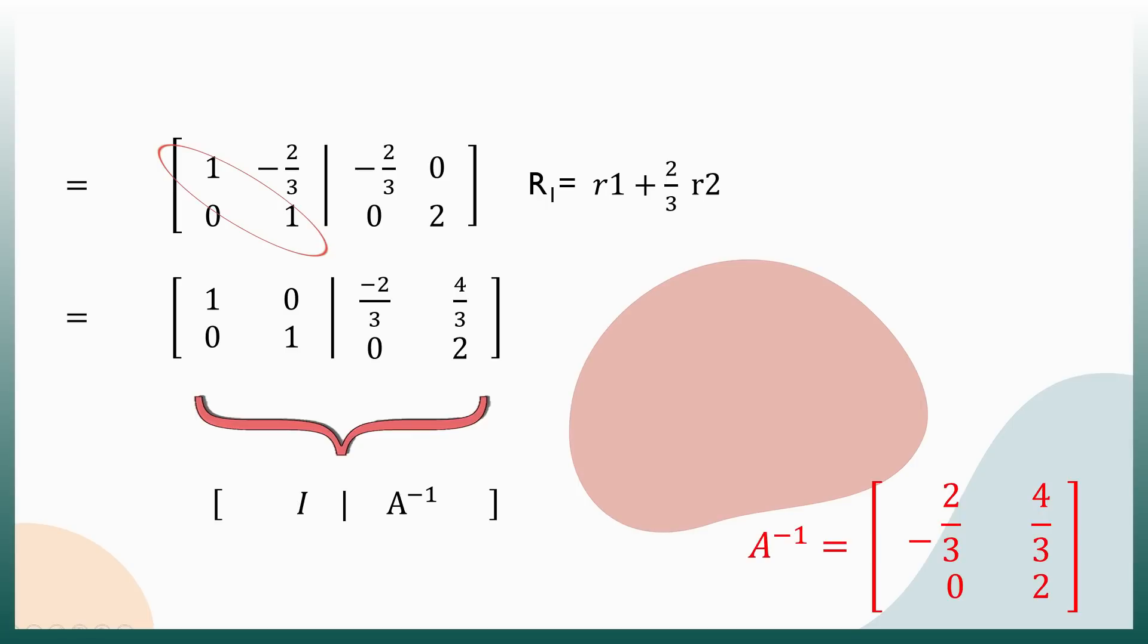How can we reduce negative 2 thirds in row 1 to 0? We have to think of a way to make row 1 and row 2 cancel each other out. So, our solution is row 1 equals R1 plus 2 thirds R2. 1 plus 0 equals 1, negative 2 thirds plus 2 thirds equals 0. On the right, negative 2 thirds plus 0 equals negative 2 thirds, and 0 plus 4 thirds equals 4 thirds. The inverse of A is negative 2 thirds, 4 thirds, 0, 2.